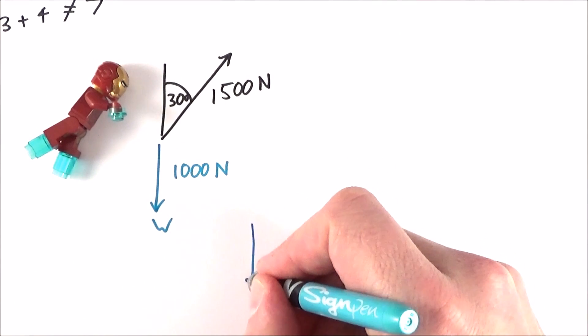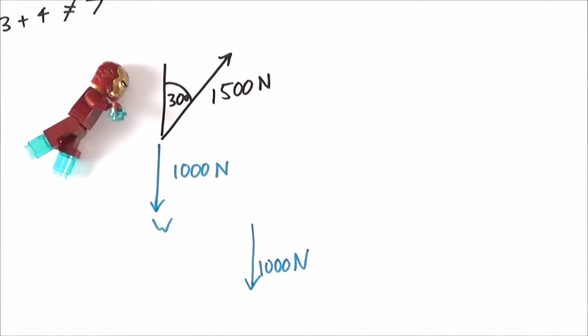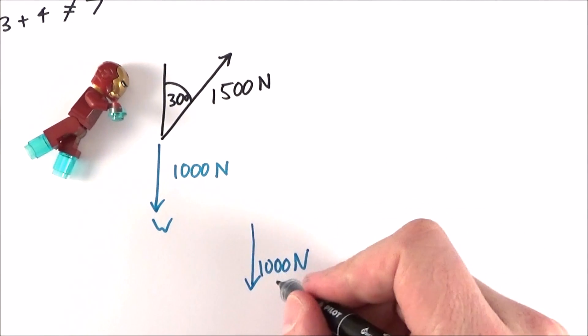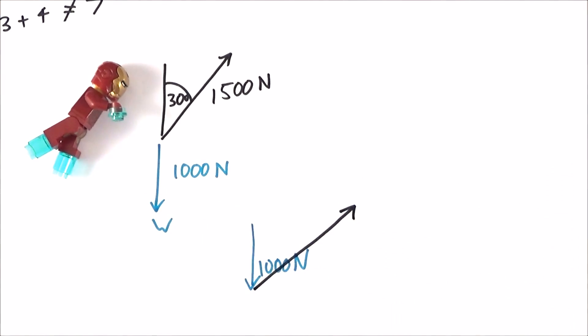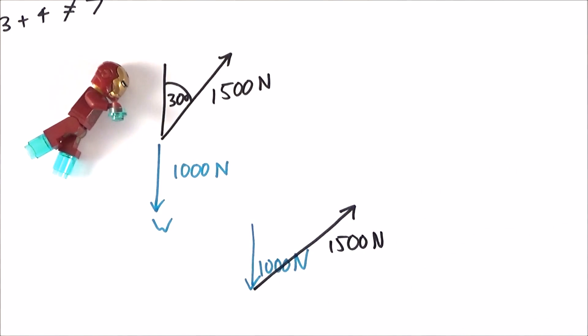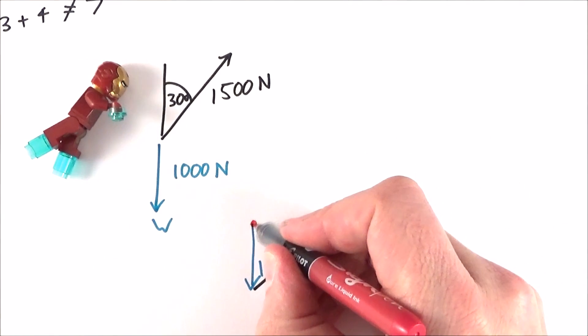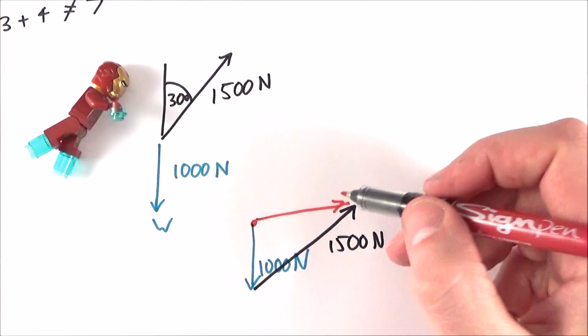So there might be this 1000 newtons acting down and if we add that end to end to the upwards newton—I've probably drawn it at the wrong angle there—we can then work out the result of these two forces on the object, and effectively it's from the start to the very end and what we have here is the result of those two there.